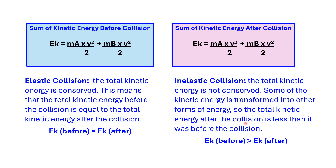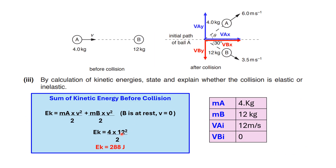The total kinetic energy after collision is less than before. Let's find out if this collision is elastic or inelastic. To calculate the sum of kinetic energy before collision, we substitute values from the pink table: mass of A is 4, velocity of A is 12 m/s, and for ball B the velocity is 0 so that term is 0. The kinetic energy before collision is 288 joules.